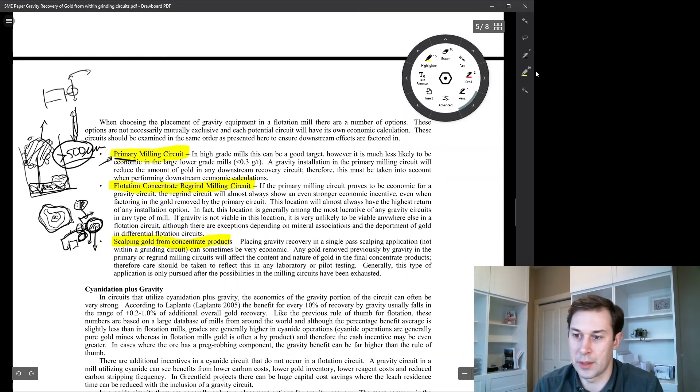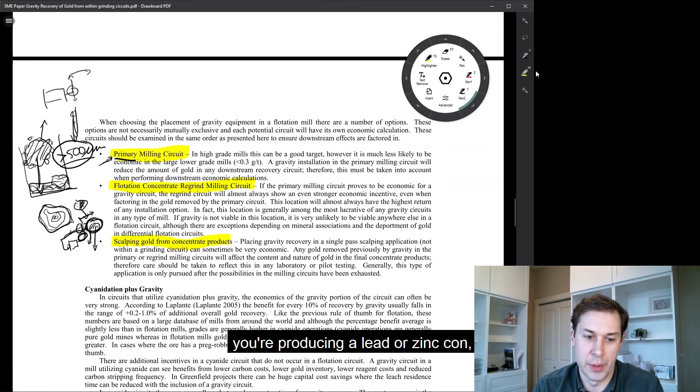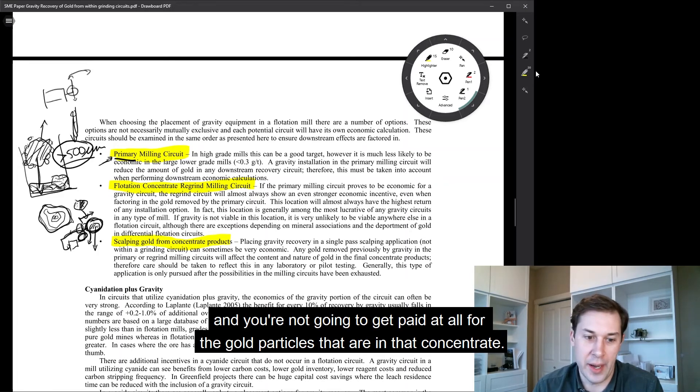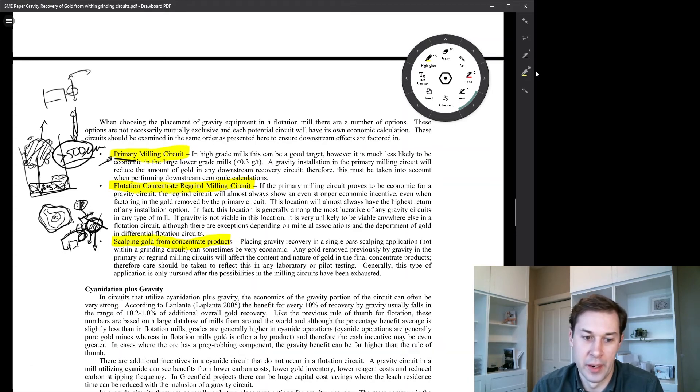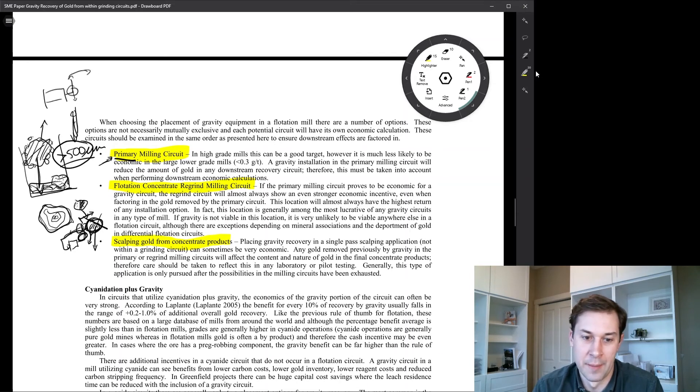Scalping gold from concentrate products where if, let's just say you're in a polymetallic mill and you're producing a lead or zinc con and you're not going to get paid at all for the gold particles that are in that concentrate, you're going to want to pull those out to try to realize some value from it.